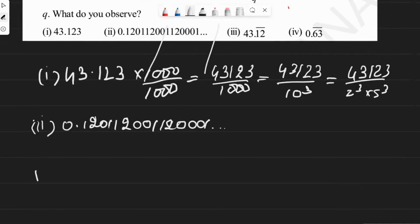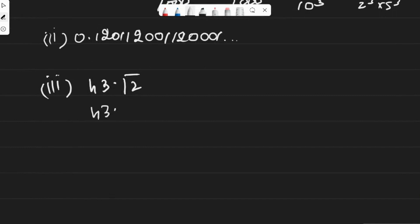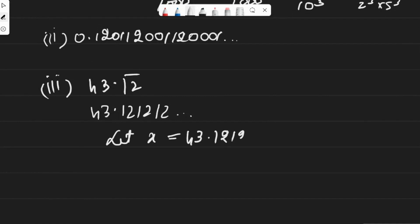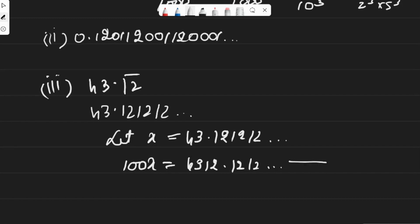The third one is 43.12 bar, which means 43.121212... and so on. Let x equal to 43.121212... Since two digits are repeating, we multiply both LHS and RHS by 100, giving 100x = 4312.121212... and so on.